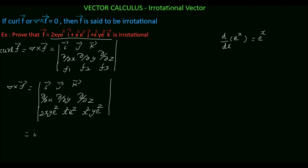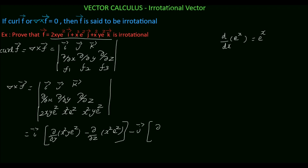Now we will expand this. The i vector term is dou by dou y of x squared y e power z, minus dou by dou z of x squared e power z. Minus j vector into dou by dou z of 2xy e power z.